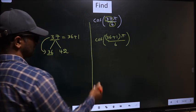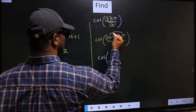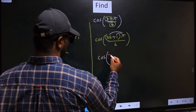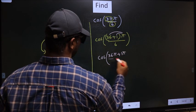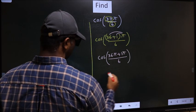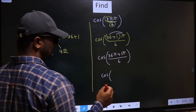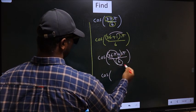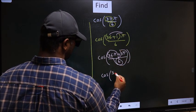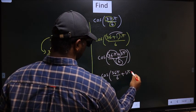Next, cos - now here you should open up the brackets. You get 36π plus π by 6. Now you should split the denominator in this way: that is 36π by 6 plus π by 6.